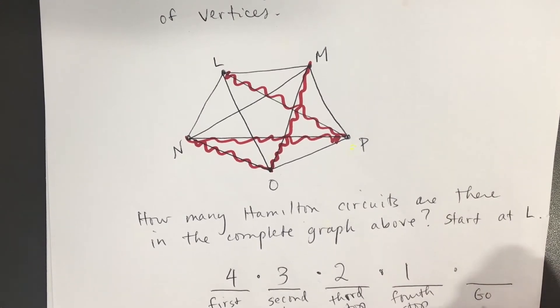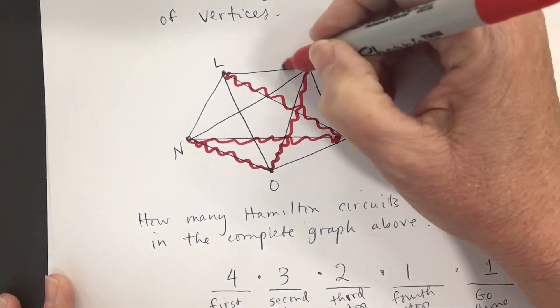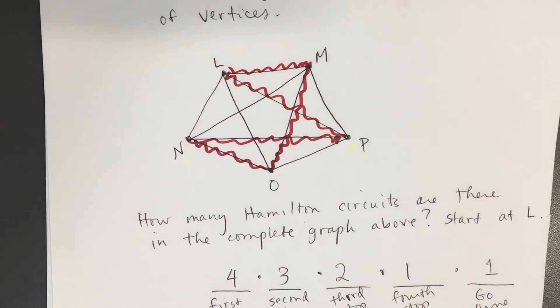And then here, the final blank, I'm going to put go home. One way, I've got to go back to L. So there I gave a different Hamilton circuit than I gave on the previous page. But as I look at the blanks, I say 4 times 3 times 2 times 1 times 1, well that's 24.